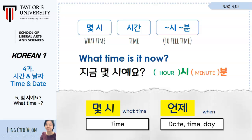여러분, before proceeding to the next video, please make sure you practice time expressions daily. Look at your watch and practice telling the time — using native Korean numbers for the hour and Sino-Korean numbers for the minutes. This daily practice will help you become familiar with both number systems.